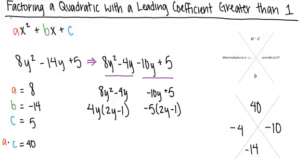Now that we have factored our groups so that each of them have a common quantity, 2y minus 1, we know that this will be one of our factors. Next, we take the two numbers we pulled out to determine our second factor. In this case, we got a positive 4y and a negative 5. So our two factors are 2y minus 1 and 4y minus 5.